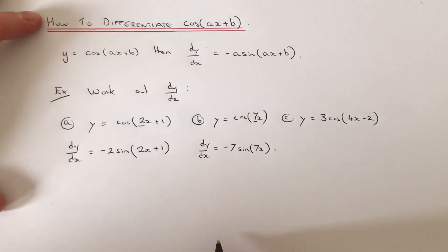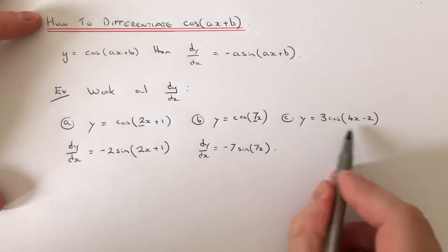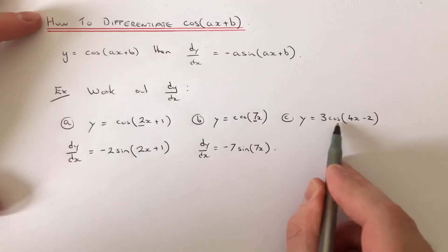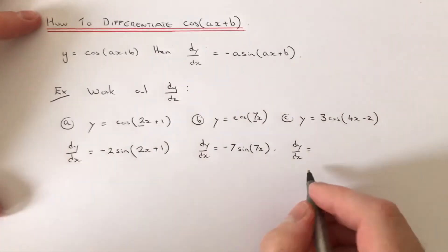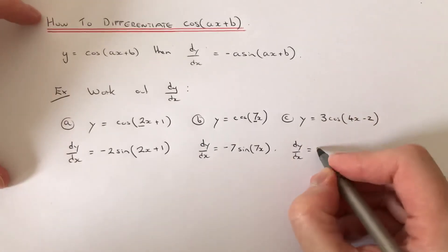And let's do part c. This one's a little bit trickier because we've got a number already before the cos. We've got y equals 3 cos(4x-2). What you can do is just ignore this 3 for the time being.